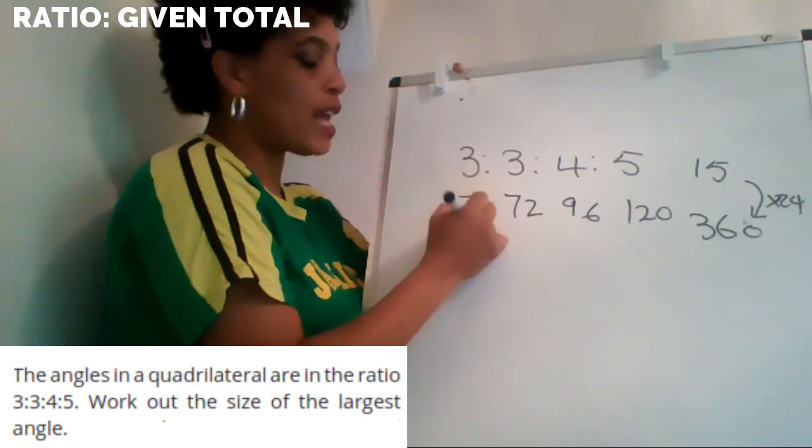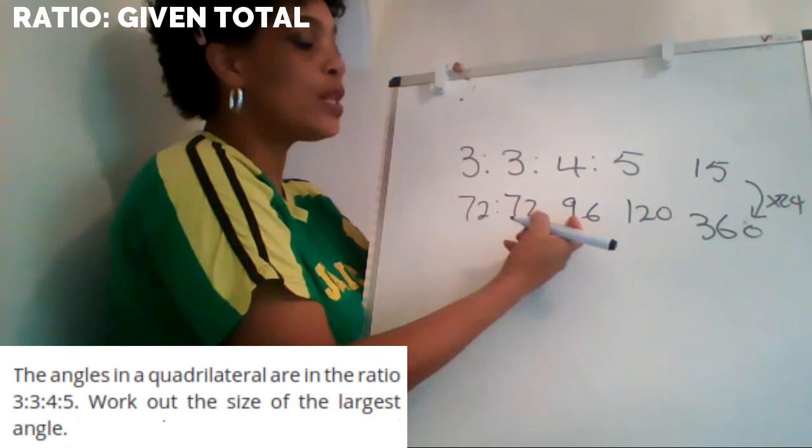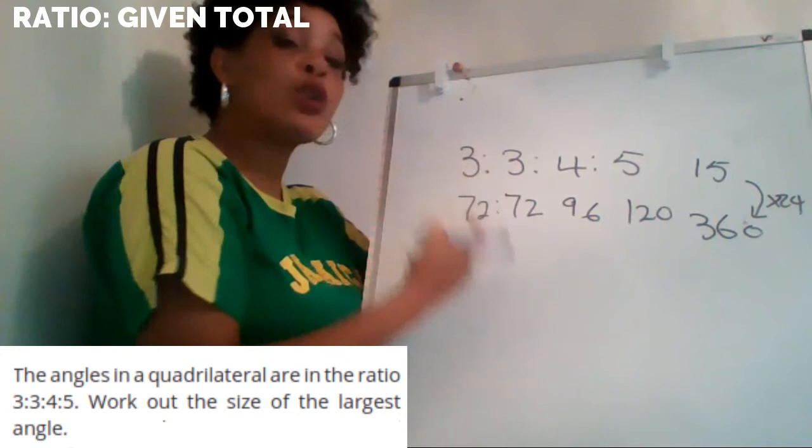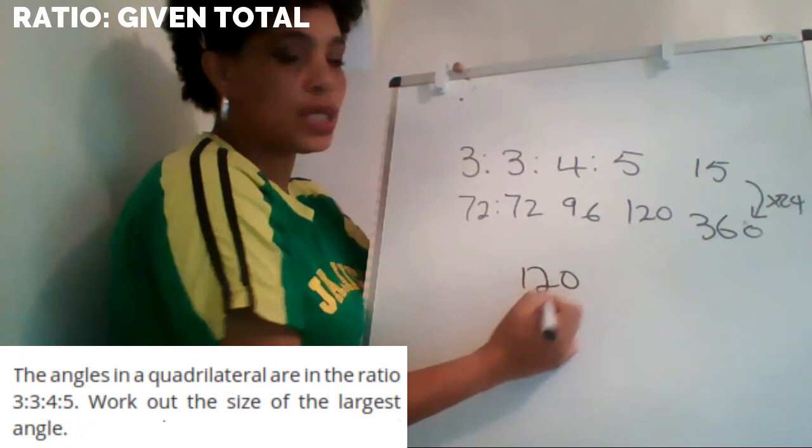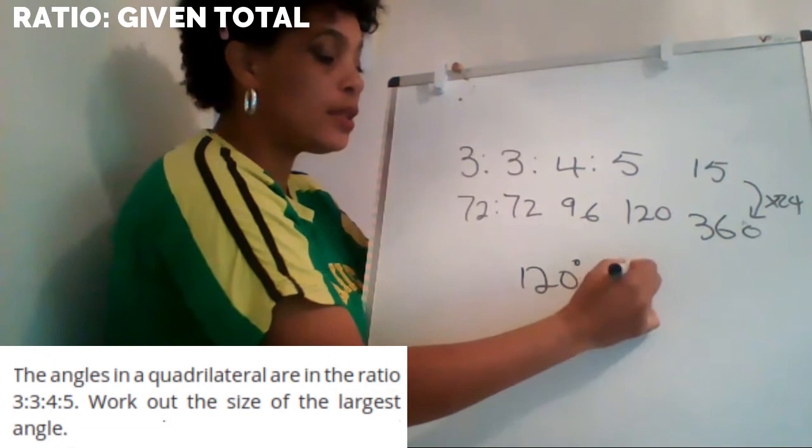So I have angles of 72, 72, 96 and 120. My question was: what is the size of the largest angle? The largest angle is 120 degrees.